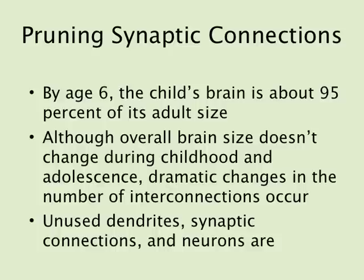By age six, the child's brain is about 95 percent of its adult size in physical mass. Although overall brain size doesn't change dramatically during childhood and adolescence, dramatic changes occur in the number of interconnections. It's not until childhood — after about age four — that we really start creating the neural connections that allow us to use more information. Unused dendrites, synaptic connections, and neurons are eventually replaced or rewired to be used more effectively.